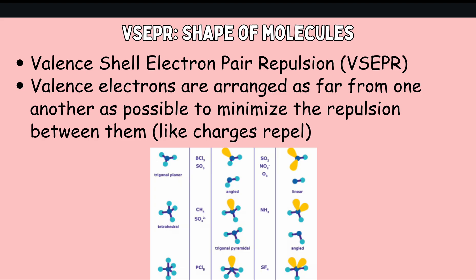VSEPR stands for the valence shell electron pair repulsion. So this is a model that we use to kind of visualize the shape of different molecules using their electrons that they share and the electrons that they have as lone pairs, so the ones that are not shared. Valence electrons are arranged as far away from one another as possible, and this is in order to minimize the repulsion between them.